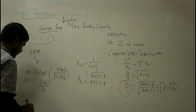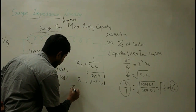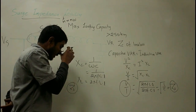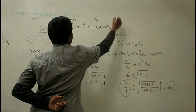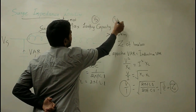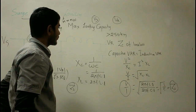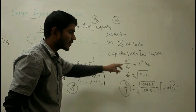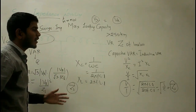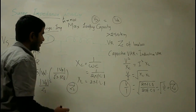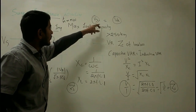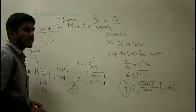When a line is terminated at the surge impedance, we have a lossless line. Normally, the sending end voltage Vs is greater than the receiving end voltage VR due to line losses. However, when we balance the two reactive powers and the line becomes lossless, Vs equals VR. This case is regarded as a flat voltage profile.